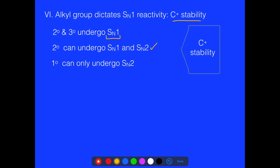Secondary substrates can undergo both SN1 and SN2 reactions because they have a stable enough carbocation to react and are not sterically hindered enough to prevent SN2. Primary groups really can only undergo SN2 because they are not able to stabilize the carbocation through hyperconjugation, so they don't typically undergo SN1.